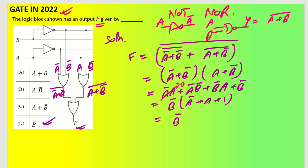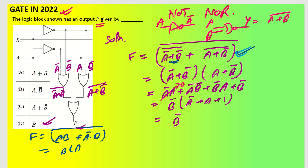One more method — Method 2: inside this function, by De Morgan's theorem, we get (Ā̄ · B̄̄) + (Ā · B) whole bar, which simplifies to (AB + ĀB) bar. Taking B common: B(A + Ā) bar = B·1 bar = B̄. So again the answer is B̄.